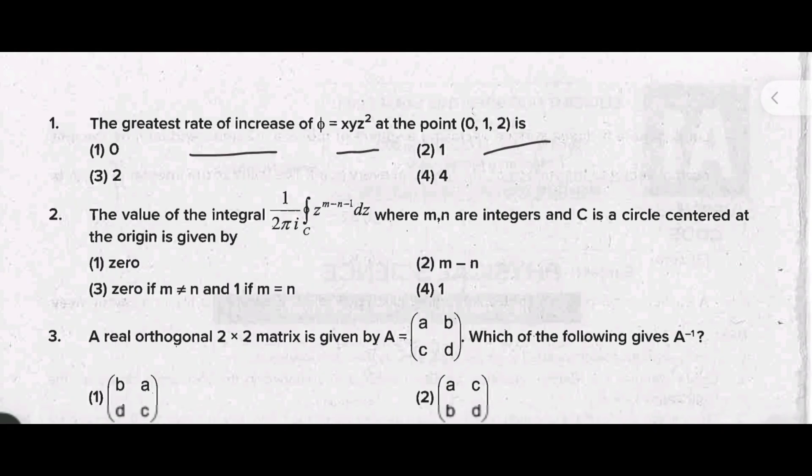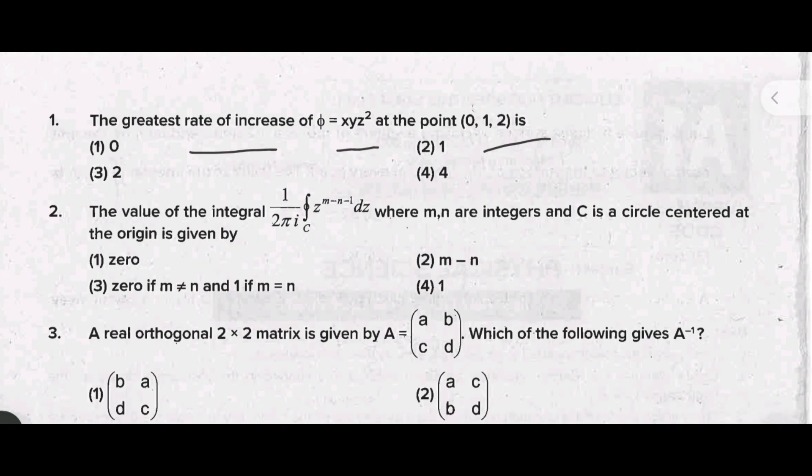Next one is second question: the value of the integral 1 by 2πi contour integral of z raised to m minus n minus 1 dz, where m, n are integers and C is a circle centered at origin is given by - the correct answer is m minus n.